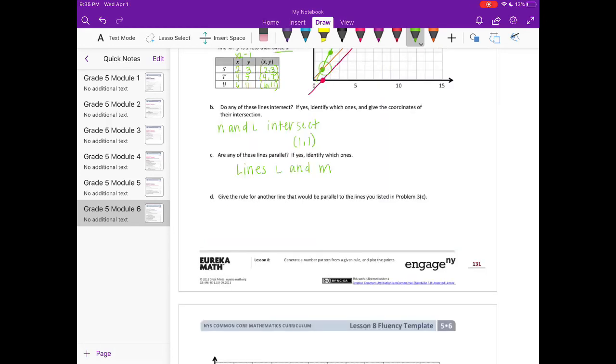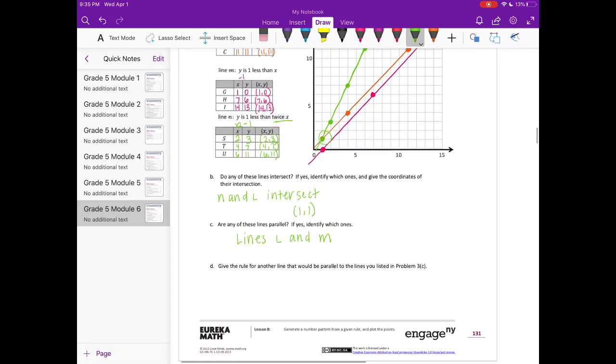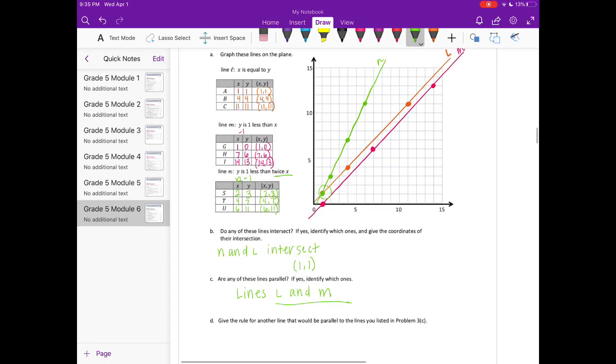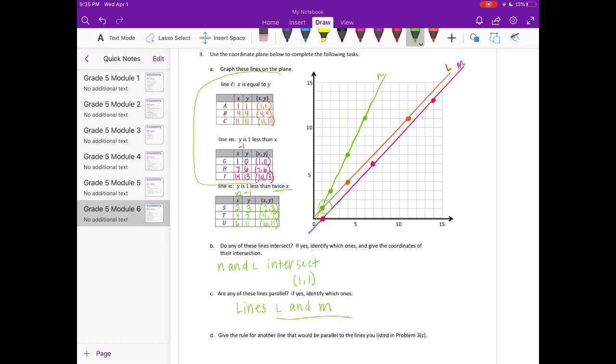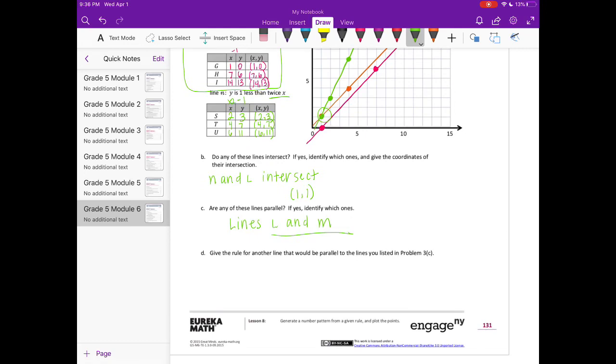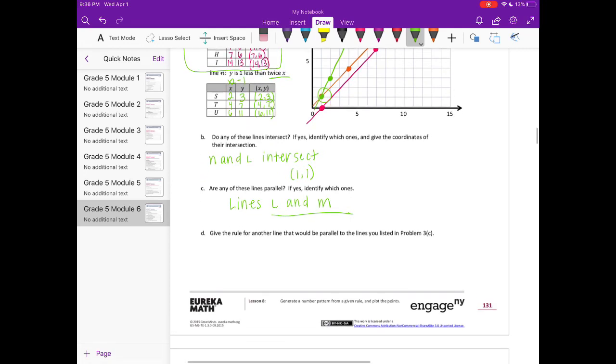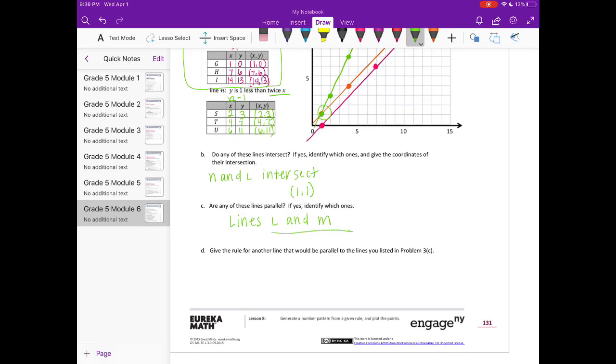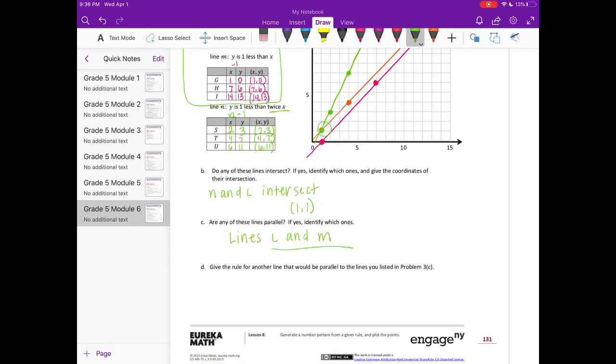Give the rule for another line that would be parallel to the lines you listed in problem 3C. So parallel to lines L and M. Notice the rules, either x is equal to y, or we're saying that y is 1 less than x. So it's either staying equal, subtracting 1, adding 1, you could subtract 2, you could subtract 3, but as long as the y is staying the same and you're adding or subtracting something, it will work.